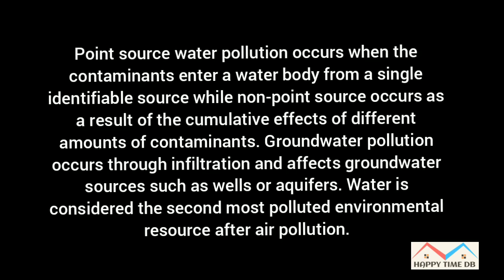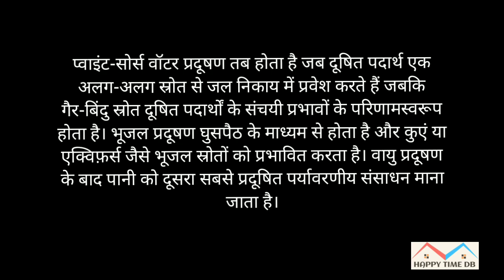Point source water pollution occurs when the contaminants enter a water body from a single identifiable source, while non-point source occurs as a result of the cumulative effects of different amounts of contaminants. Groundwater pollution occurs through infiltration and affects groundwater sources such as wells or aquifers. Water is considered the second most polluted environmental resource after air pollution. बिंदु स्रोत जल प्रदूषण तब होता है जब दूषित पदार्थ एक अलग स्रोत से जल निकाय में प्रवेश करते हैं। भूजल प्रदूषण के माध्यम से होता है और कुएं या aquifers जैसे भूजल स्रोतों को प्रभावित करता है। वायु प्रदूषण के बाद पानी को दूसरा सबसे प्रदूषित पर्यावरणीय संसाधन माना जाता है।